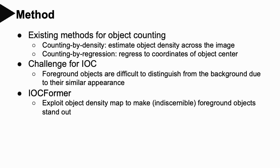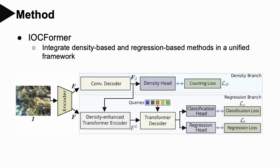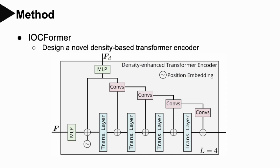For IOC, the challenge is that foreground objects are difficult to distinguish from the background due to their similar appearance. We propose IOC Formal by combining the benefits of density-based counting and regression-based counting. Specifically, we exploit an object density map to make foreground objects stand out. Our method integrates density-based and regression-based methods in a unified framework. We also designed a density-based transformer encoder so that information from the density branch could be effectively integrated into the regression branch. For more details, please refer to our paper.